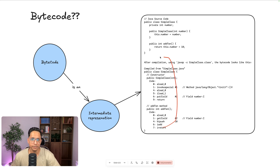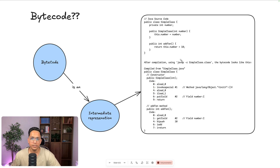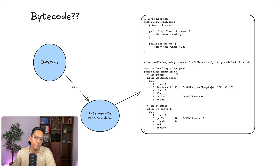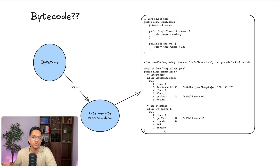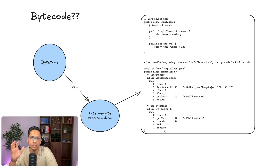This is how the bytecode looks — for each construct, say a constructor, it has a set of instructions, and the JVM knows how to understand these instructions. If you look inside the class file, this is how it looks — these are really instructions in a binary format. Similarly, for a function, you have some instructions that specify what computation is required. The JVM doesn't know anything about your Java language; it knows about this intermediate representation, which is the bytecode.